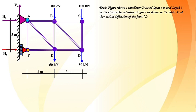Let us start with a new problem by the method of joint. The first step is to check whether it is a perfect or imperfect truss, for which we need to know the number of members and joints. Using the governing equation m = 2j - 3, we can identify the type of truss.